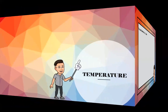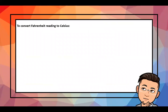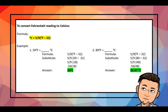To convert a Fahrenheit reading to Celsius, use the formula: degrees Celsius = (5/9) × (degrees Fahrenheit − 32). For example, to convert 50°F to Celsius: (5/9) × (50 − 32) = (5/9) × 18 = 0.56 × 18 = 10 degrees Celsius.